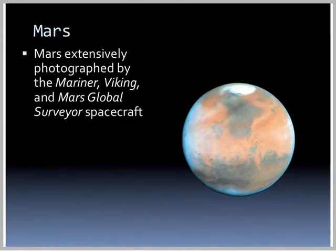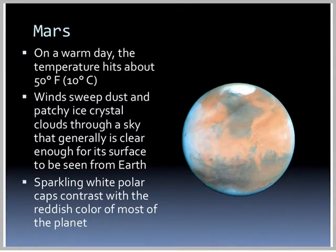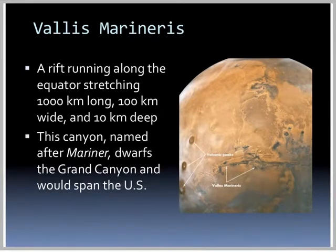Mars has been extensively photographed by the Mariner, Viking, and Mars Global Surveyor spacecraft. On a warm day, temperatures can hit up to 50 degrees Fahrenheit. We see sparkling white polar caps contrasting the reddish color of most of the planet. There is a large rift running along the equator — Valles Marineris — stretching 1,000 kilometers long, 100 kilometers wide, and 10 kilometers deep. This canyon, named after Mariner, dwarfs the Grand Canyon and would span the entire United States.